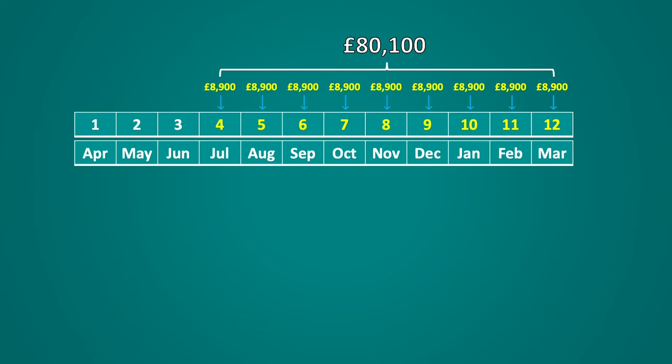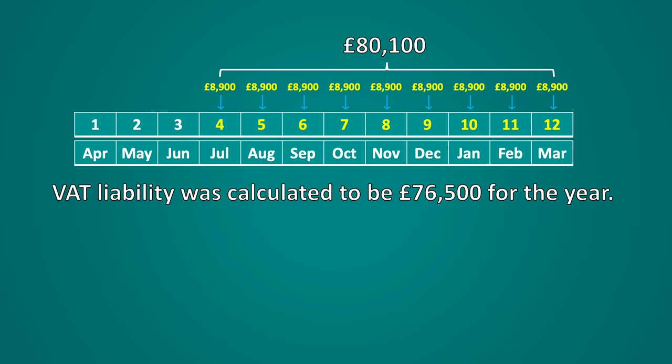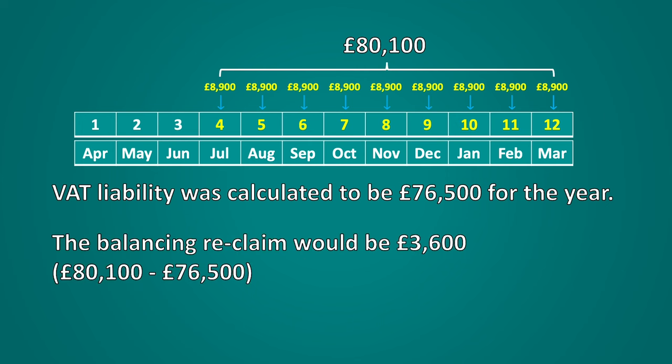This would make 9 payments of £8,900 equalling £80,100. The VAT liability for the year has been calculated as £76,500. As you can see, the business has paid more to HMRC than what the VAT liability has been calculated as for the year. When it came to submitting the VAT return and what would usually be the 10th payment, the business would be able to reclaim the difference between what had been paid and the VAT liability. In this example that would be £80,100 less £76,500, giving the business a reclaim amount of £3,600, which would be paid to the business from HMRC.